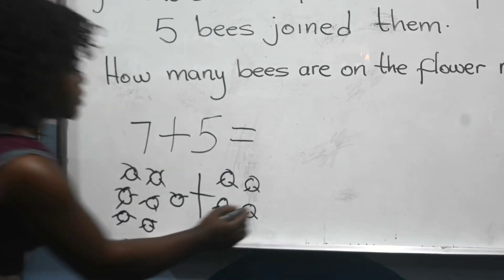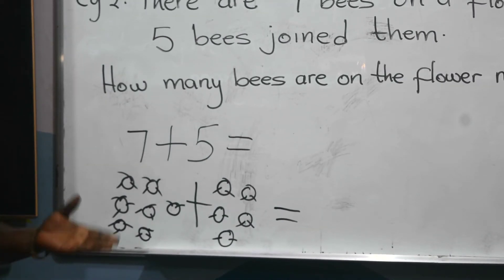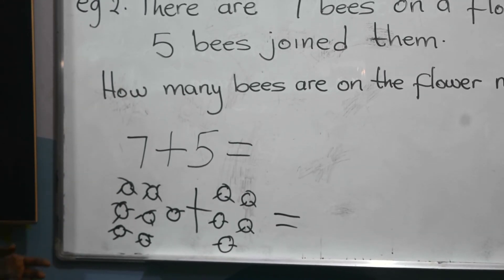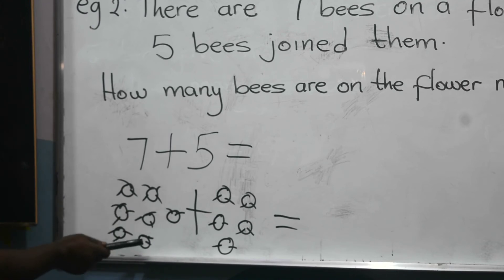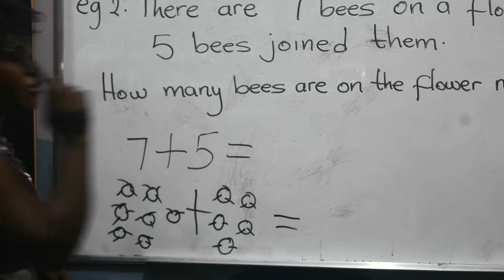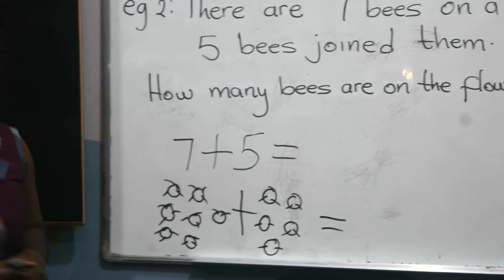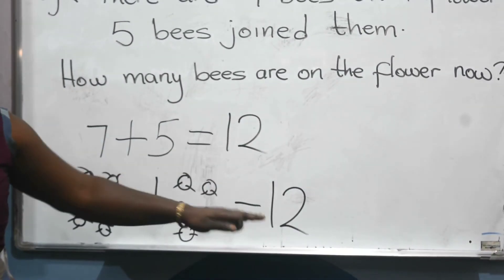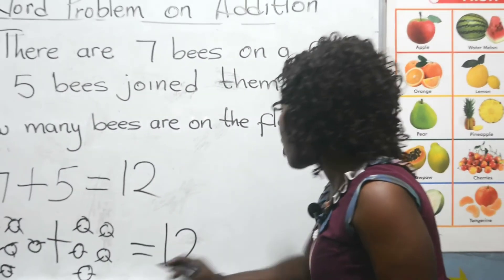Then your equal sign. Because the question says how many bees are on the flower now, we are to count all together. So let's start counting: one, two, three, four, five, six, seven, eight, nine, ten, eleven, twelve. So seven bees plus five bees will give me twelve bees. But don't forget to write the bees attached to it — so twelve bees. Then you are done with your question.